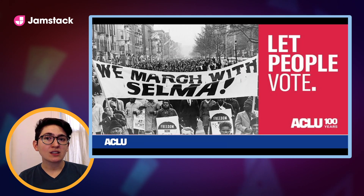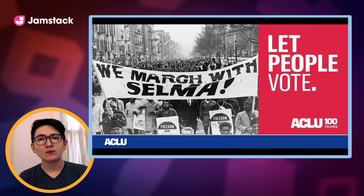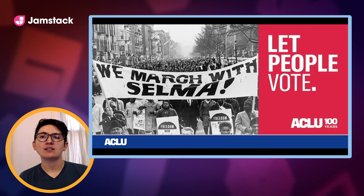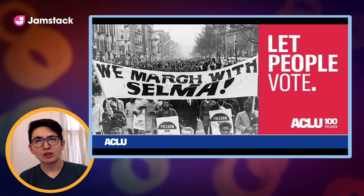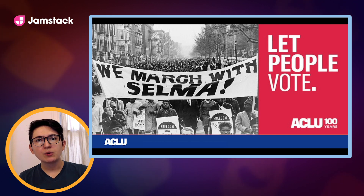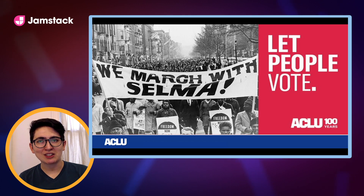Voting rights is one of the many issues that our organization has worked on for decades. The ACLU's voting rights project was established in 1965, the same year the historic Voting Rights Act was signed into law. 55 years later, we filed hundreds of lawsuits and continue to fight for the rights of all Americans to vote. We knew we were going to build out something on our website about voting leading up to the 2020 election, but we never could have predicted what that would look like at the start of this year.